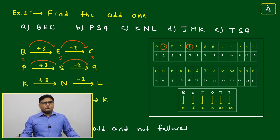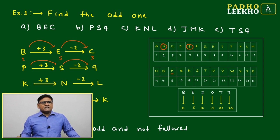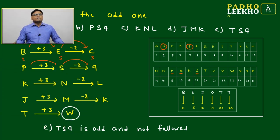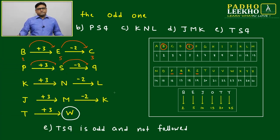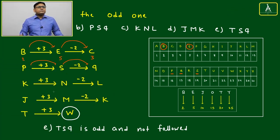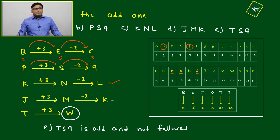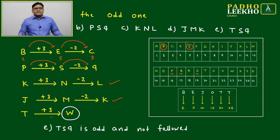We can confirm: P is the 16th letter. 16 plus 3 is 19, and 19 minus 2 is 17. Next, KNL — that also follows the pattern. JMK — that also follows the pattern.